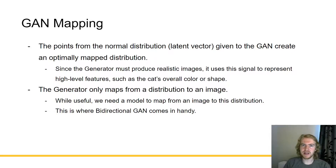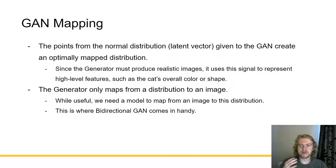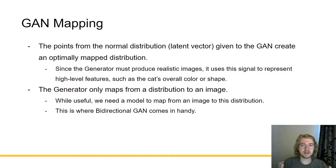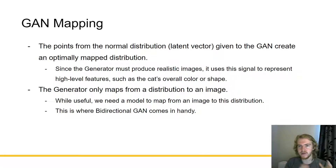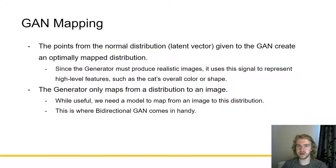Let's talk about the mapping of GANs. The points from the normal distribution or latent vector given to the generator create an optimally mapped distribution. Since the generator must produce realistic images, it uses this signal to represent high-level features, such as the cat's overall color or shape — the color of its fur versus the background, the shape of its eyes, where all of these features are being placed into the image, and how it builds the nose, etc. The generator only maps from a distribution to an image, however. While this is useful for many use cases like generating infinite pictures of cats, we don't need this for anomaly detection — what we need is the inverse. We need a model to map from an image to this distribution, not vice versa.